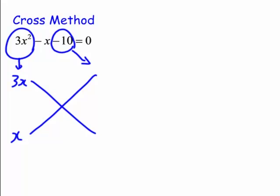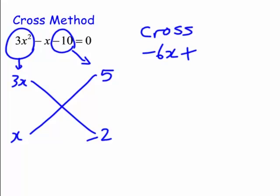When we multiply along the arms of the cross, the results need to add up to negative 1x. I suspect we need 5 and 2 as the factors of minus 10. There's a little trial and error — one of them needs to be negative. If we make it minus 2, the cross gives 3x times minus 2 equals minus 6x, and 5 times x equals 5x, so the cross equals minus x. That's exactly what we want.